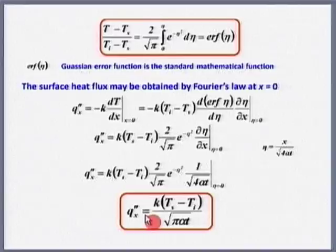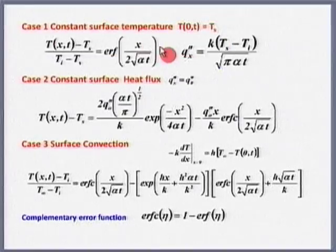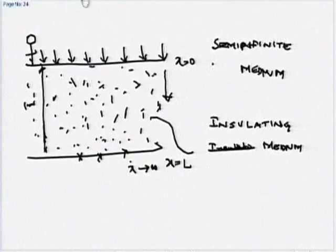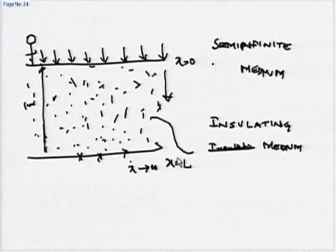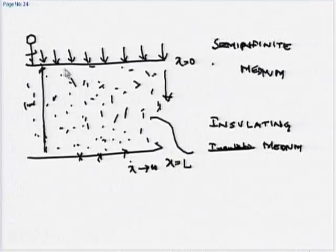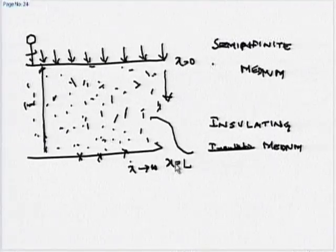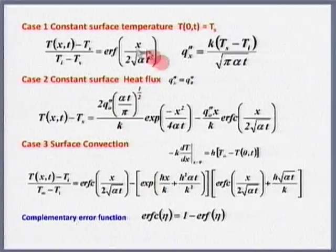So we have got the temperature distribution and the heat flux. With this, one can also work out solutions for constant heat flux and convective boundary conditions. But remember — this solution is valid for a semi-infinite medium, meaning for the complete span of time the bottom surface does not know whatever boundary condition was applied on the top. For that duration of time I can apply this solution.